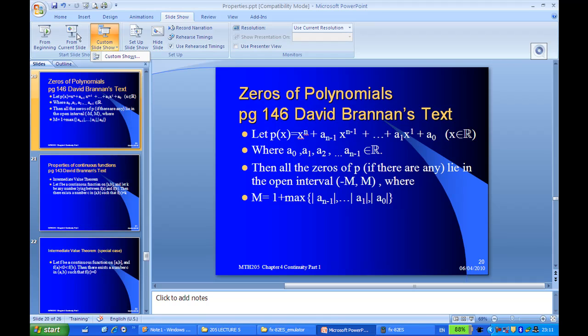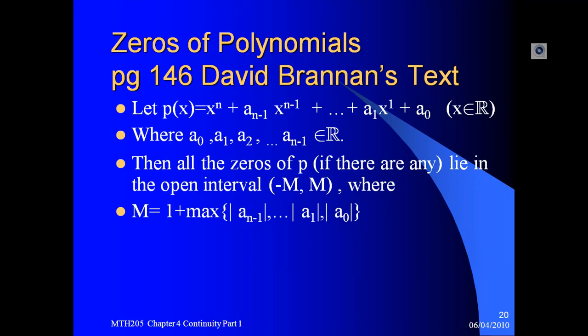For zeros of a polynomial, page 146 by David Brannan's text here, if P(x) is a polynomial of degree n, where the leading coefficient is 1, where a₀, a₁, a₂, through aₙ₋₁ are the coefficients of x power n minus 1, all the way down to the constant term, are real numbers.